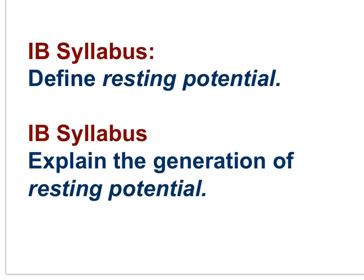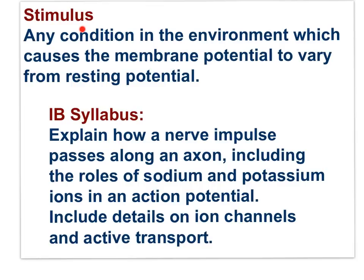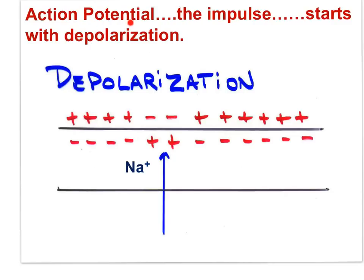Here are the relevant IB syllabus statements: define resting potential and explain the generation of resting potential. Resting potential is the polarized condition where there is a difference in charge on either side of a resting neuron — the inside is 70 millivolts less positive than the outside. The sodium-potassium pump is responsible for resting potential. A stimulus is any condition in the environment which causes the membrane potential to vary from the resting potential. The action potential starts with depolarization.